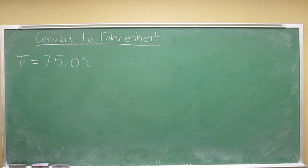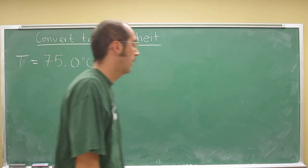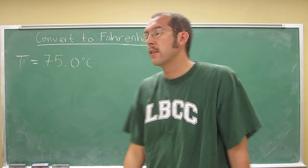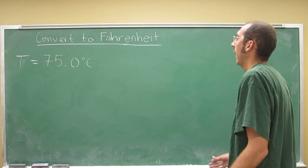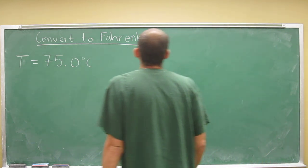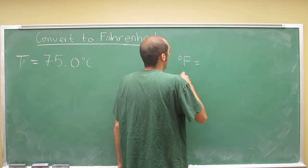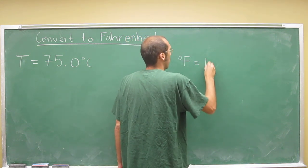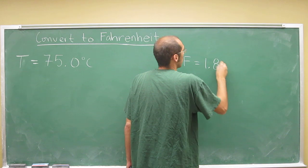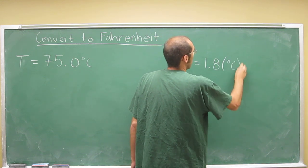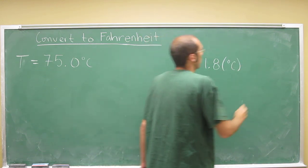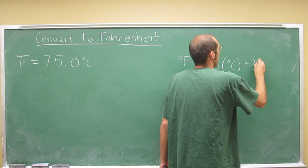Like we said before, this is the formula for going from Celsius to Fahrenheit and from Fahrenheit to Celsius, back and forth. So remember, the formula is degrees Fahrenheit equals 1.8 times the temperature in degrees Celsius plus 32.